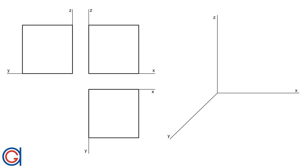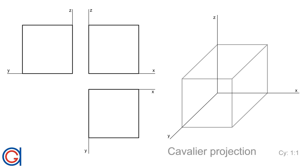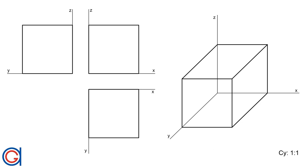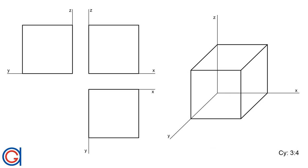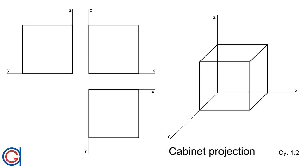As you can see on the screen, we have the plan view, the side elevation and the end elevation of a cube. If we represent this cube in cavalier perspective, you can see the sides parallel to the Y axis appear longer than the others, even though they are not longer. So to avoid this optical illusion, we usually use a reduced scale on the Y axis such as 3 to 4, 1 to 4, or 1 to 2, which is called cabinet projection and is the most commonly used scale because it is the most realistic looking.